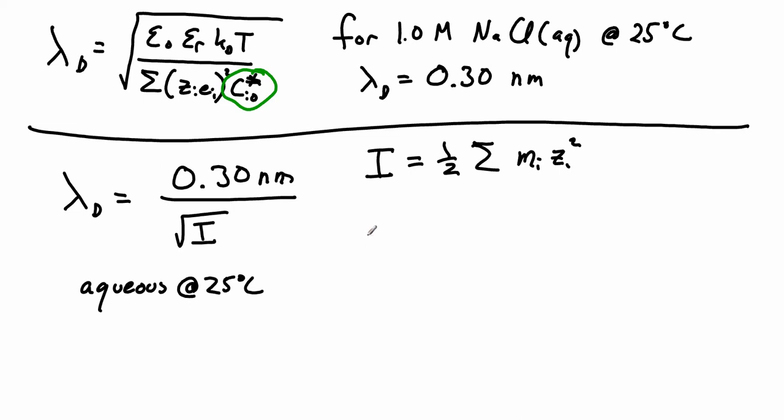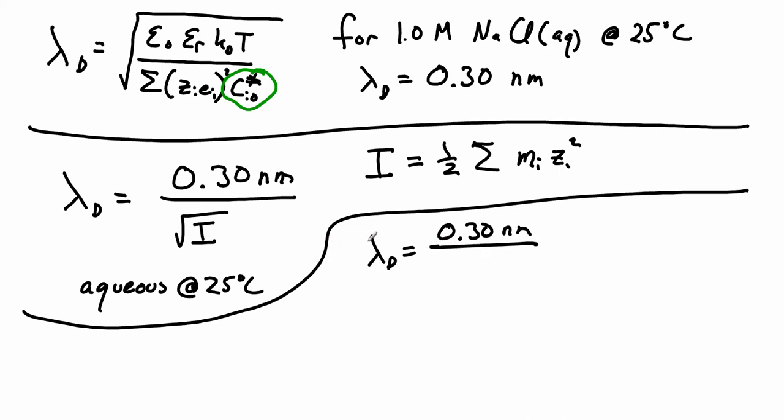For our problem, the Debye length is 0.30 nanometers over the square root of the ionic strength, which is 100 millimolar or 0.100 molar. We get 0.96 nanometers. Kappa is one over the Debye length.